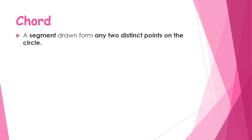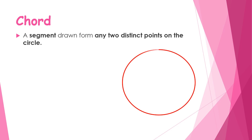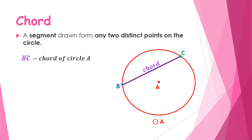The next term is chord. A chord is a segment drawn between any two distinct points on the circle. On Circle A with points B and C on the circle, if you draw a segment joining B and C, you form a chord. Therefore, segment BC is a chord of Circle A.